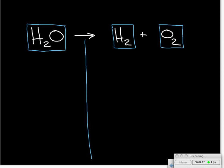If we take a look at this one, we could be tempted to balance it by adding a subscript of 2 to H₂O, making it H₂O₂, giving us two hydrogens and two oxygens on each side. But we would not be describing the same reaction — we'd be describing the decomposition of hydrogen peroxide, not the decomposition of water. So we don't want to change what's inside those boxes.